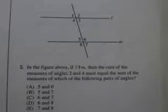So in this problem, it says in the figure above, if line L is parallel to line M, then the sum of measures of angles 2 and 4 must equal the sum of the measures of which of the following pairs. So if we look, we see 2 and 4.